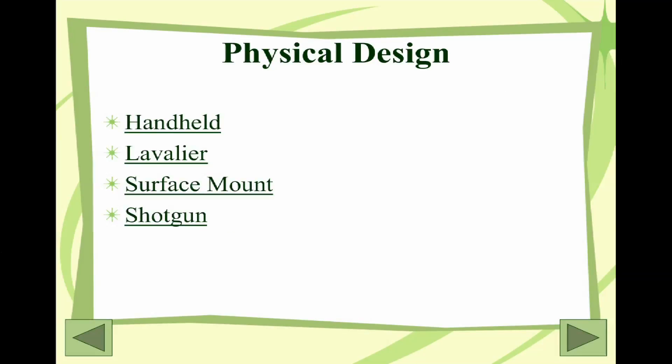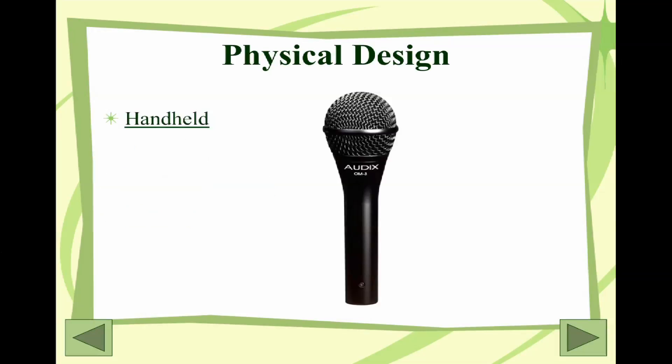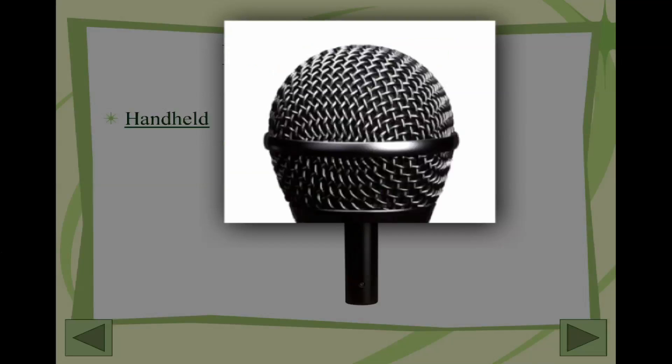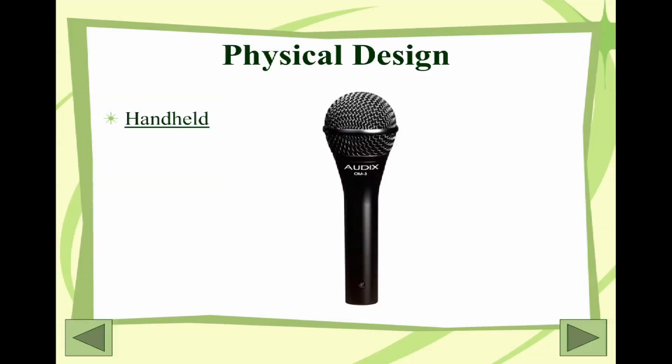When we talk about physical design, there are four main types: handheld ones, lavalier microphones (also called tie microphones or lapel mics), surface mount microphones, and shotgun mics, which we'll use a lot. A standard handheld one is what you see people singing with — it has a little screen over it that acts as a pop filter. A pop filter basically blocks the P's and T sounds we make when talking, since some people create a very loud popping sound on those consonants.